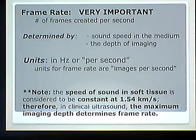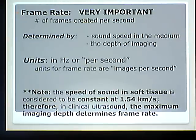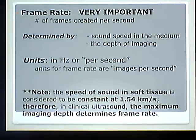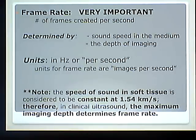Frame rate is measured in hertz — per second means hertz. So if my frame rate is 10 frames per second, that's 10 hertz. Now, the speed of sound in soft tissue is considered constant at 1.54 kilometers per second, or 1540 meters per second, or 1.54 millimeters per microsecond. Therefore, in clinical ultrasound, the maximum imaging depth determines the frame rate. Since we only image soft tissue, speed of sound is constant and never changes, so we'll focus in detail on how depth of imaging affects our frame rate.